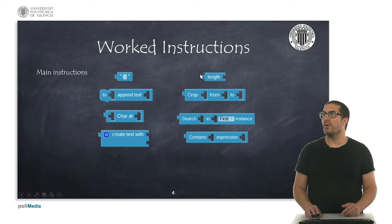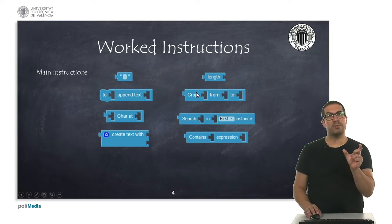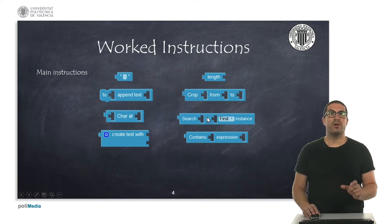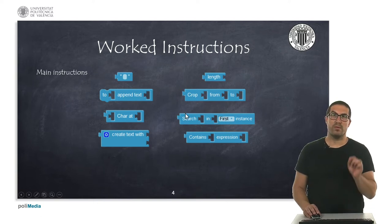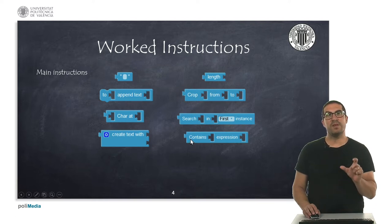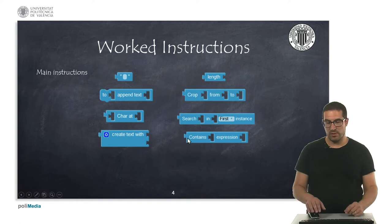This returns the number of characters of a specific string and this will allow me to obtain a specific substring. We are cropping, we are getting a small string and here we have to indicate the initial position and the final position. This instruction here will search for a specific string on a sentence and it can return the first instance or the last instance and then it will return the position where this string has been found. And this one is similar to that one but it returns a boolean. It checks if a specific expression contains a string or not and returns true or false.